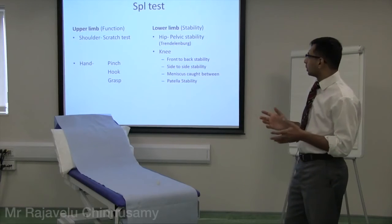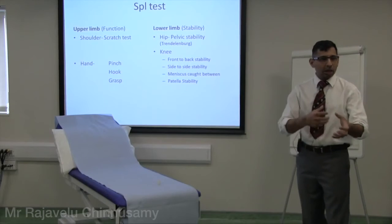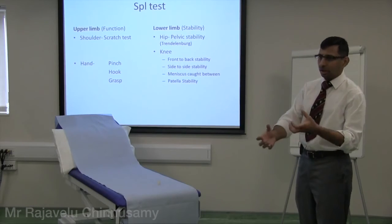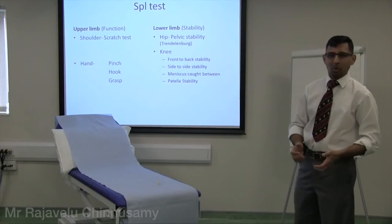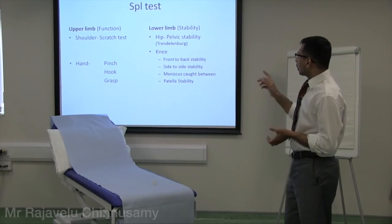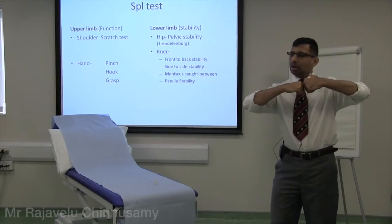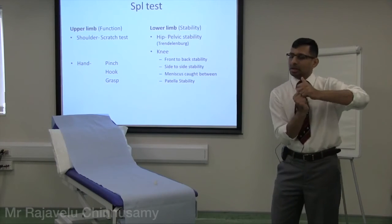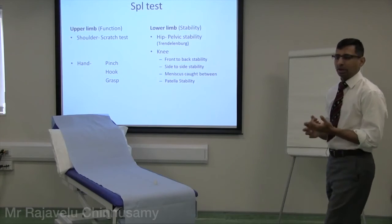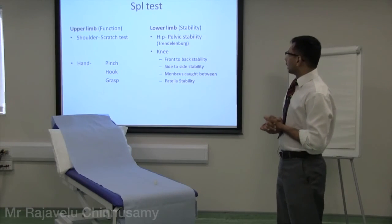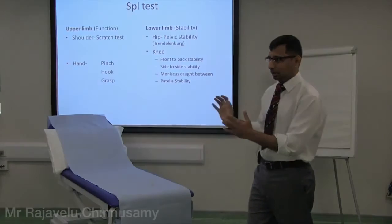For lower limb, you look for stability in special tests. First is Trendelenburg — whether it drops or not. For the knee, front-to-back stability is tested by the ACL — anterior cruciate ligament. Side-to-side stability is tested by the collaterals. Then you want to look whether something is caught between the joint, which is the meniscus — so you twist and extend, twist and extend, in internal and external rotation. If there is pain it is because the meniscus gets pinched. Then patellar stability. That is the special test overview. Now we will go to individual joints.